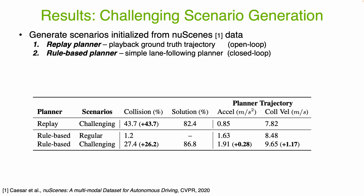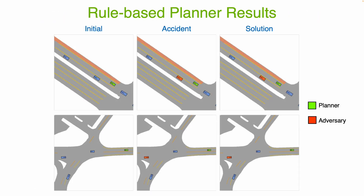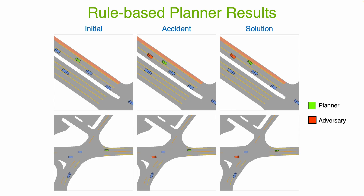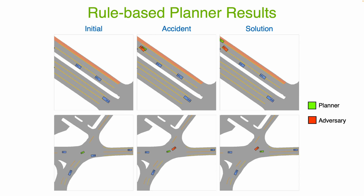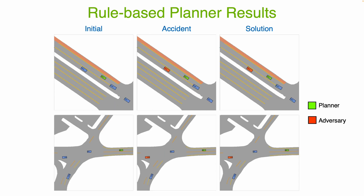Moreover, challenging scenarios cause the planner to drive in a less comfortable manner, as indicated by higher accelerations, and cause more severe collisions than in regular scenarios. Here we show two examples of scenarios generated for the rule-based planner. Strive generates interesting and plausible adversarial behavior, such as sudden lane changes or turns that cause accidents.